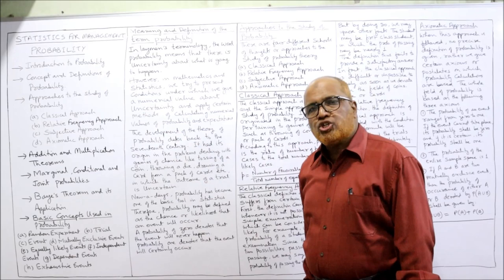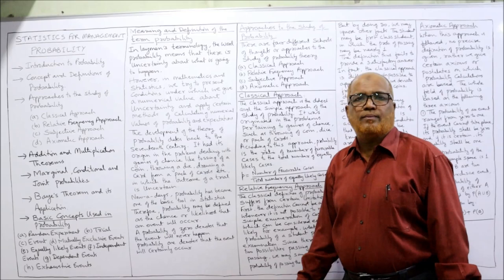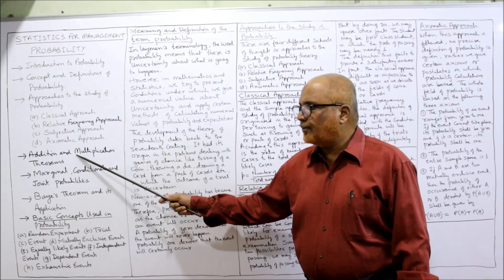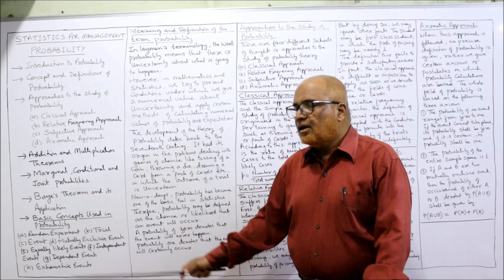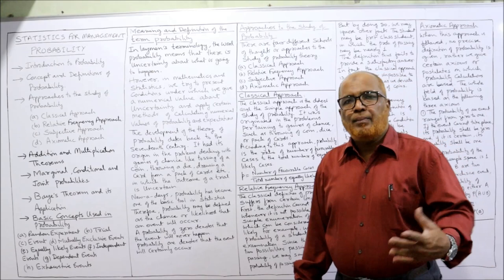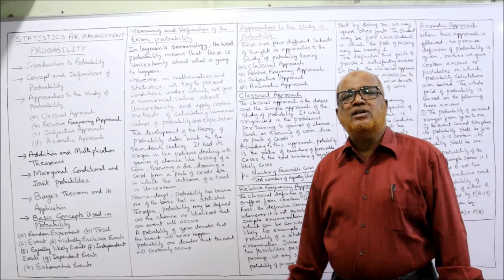The contents I'm going to explain include: introduction to probability, concept and definition of probability, approaches to the study of probability — classical approach, relative frequency approach, subjective approach, and axiomatic approach — the two theorems of probability: multiplication theorem and addition theorem, and the types of probability: marginal probability, conditional probability, joint probability, and Bayes' theorem and its application.